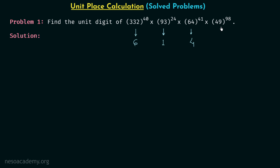Moving on to the final power, 49 raised to power 98. The digit at the unit place is 9. Like 4, we check whether the power is even or odd. When the power is even we get 1 at the unit place, and when the power is odd we get 9. Here the power 98 is even, so we get 1 at the unit place.